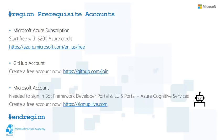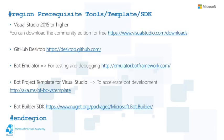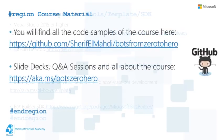As for the tools, please make sure to download and install Visual Studio 2015 or higher, GitHub Desktop, the Bot Emulator, the Bot Project Template for Visual Studio, and also the Bot Builder SDK. For the template and the SDK, you can keep those aside as we will be doing this throughout this module together. You will find all the source code of the demos on our GitHub repo, and you can also download the slide decks and find out about our Q&A sessions from the provided links.